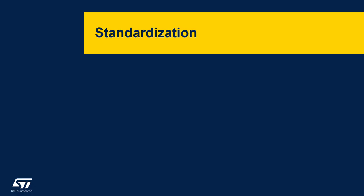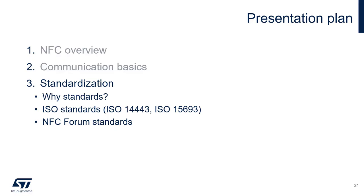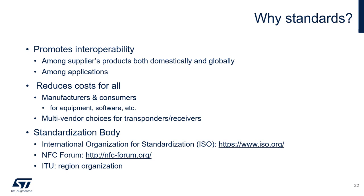Now let's focus on standardization. We'll ask why we have standards, look at ISO standards 14443 and 15693, and then the NFC Forum standards. Standards promote interoperability among supplier products both domestically and globally, and among applications. They reduce cost for all — both manufacturers and consumers — and allow for multi-vendor choices for transponders and receivers. There are three standardization bodies: the International Organization for Standardization (ISO), the NFC Forum, and the ITU, which is regionally organized.